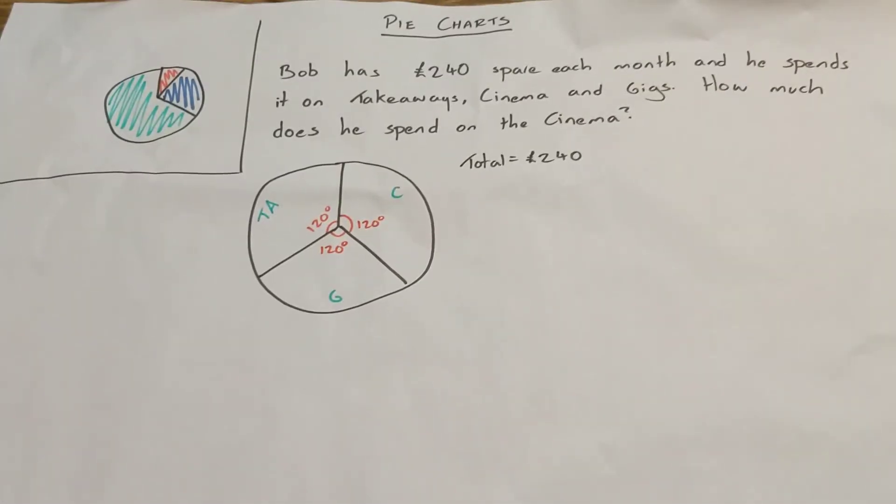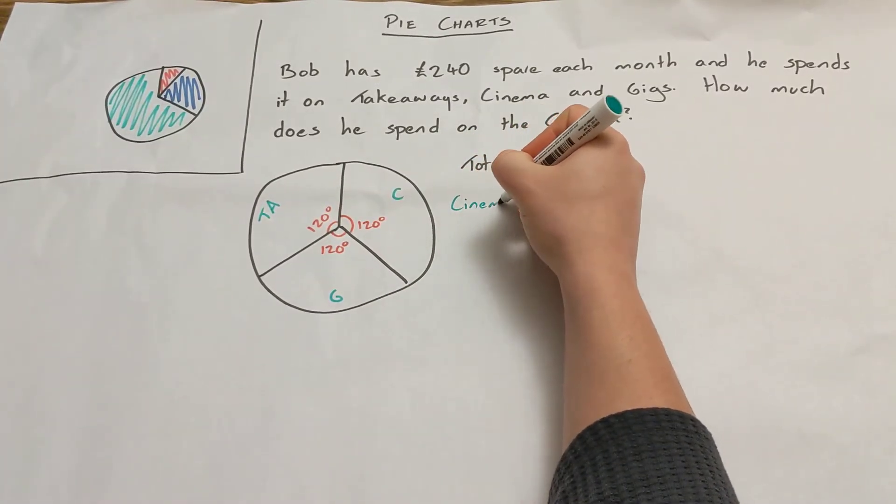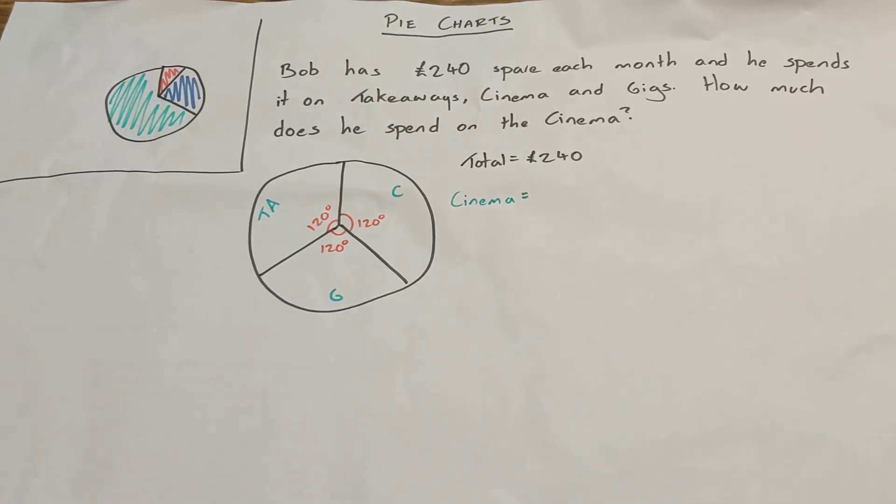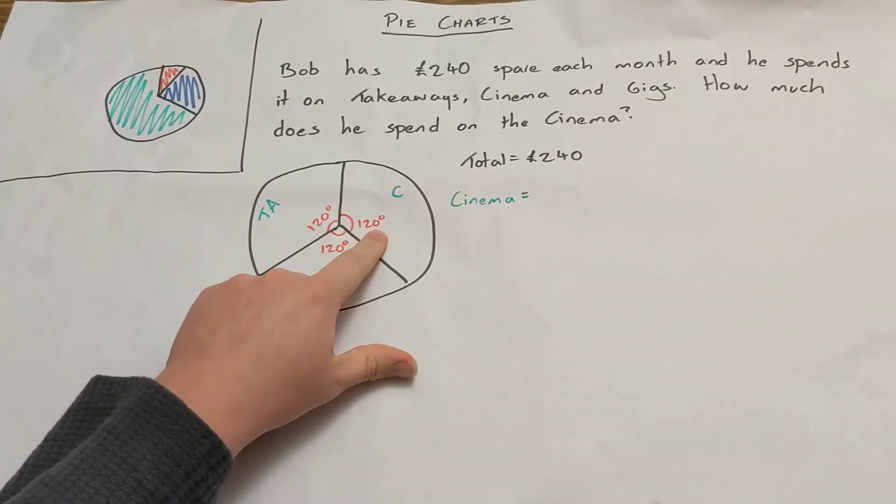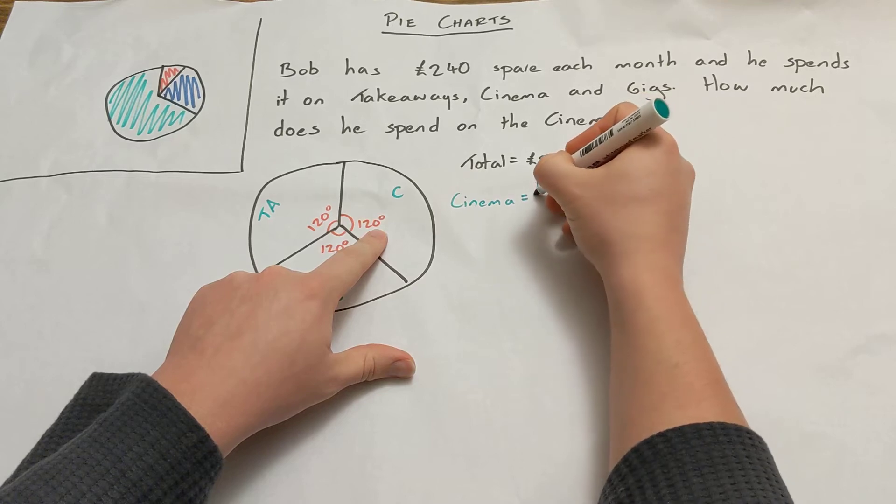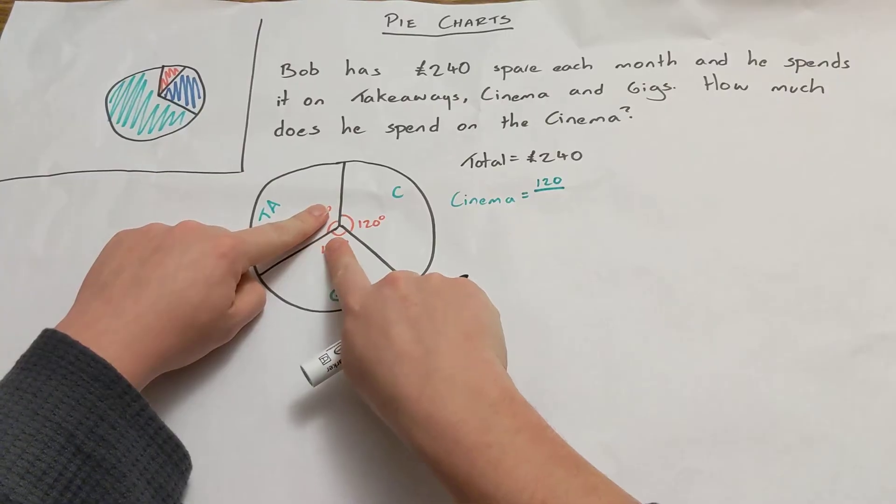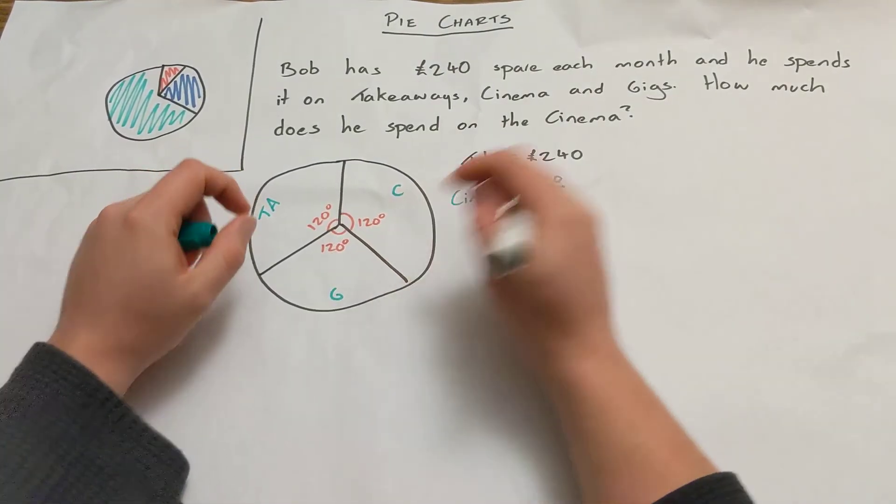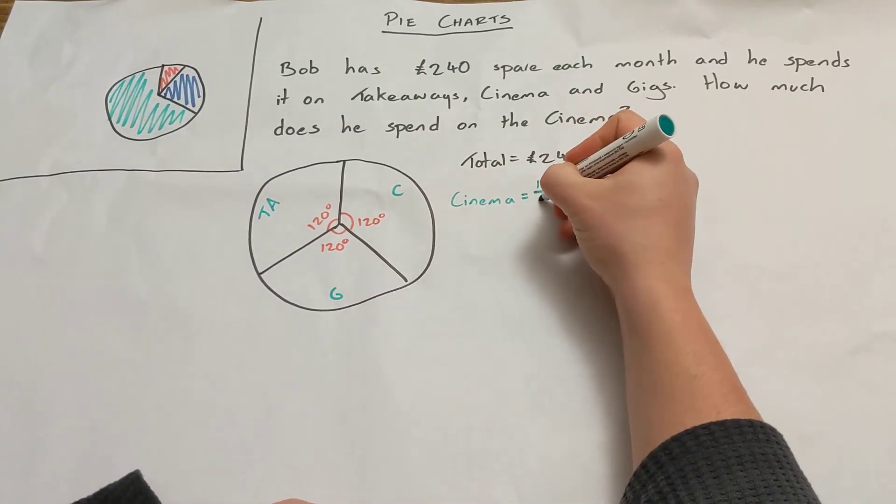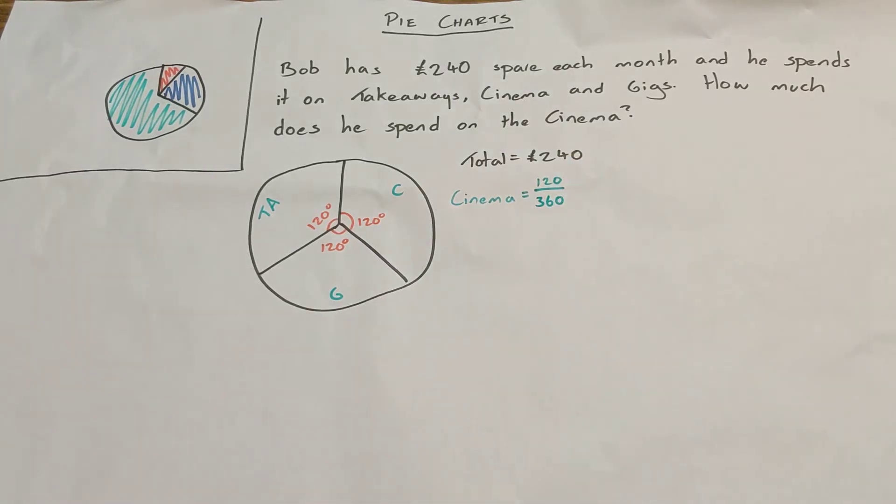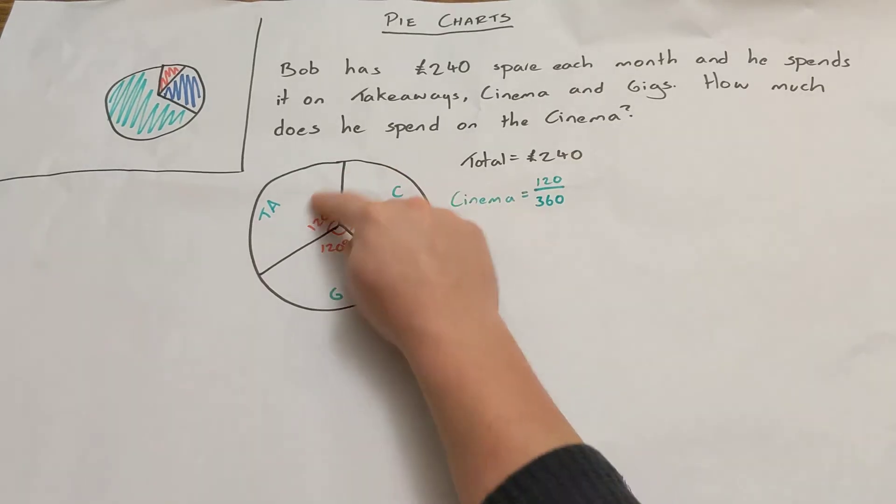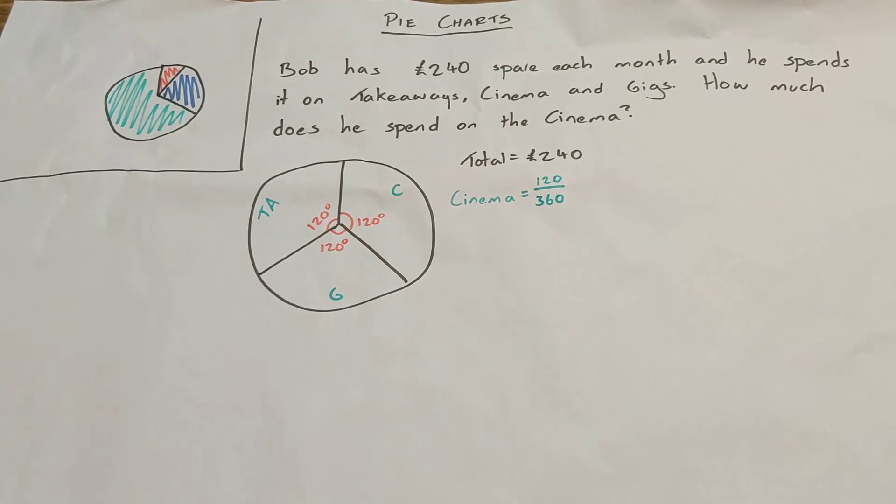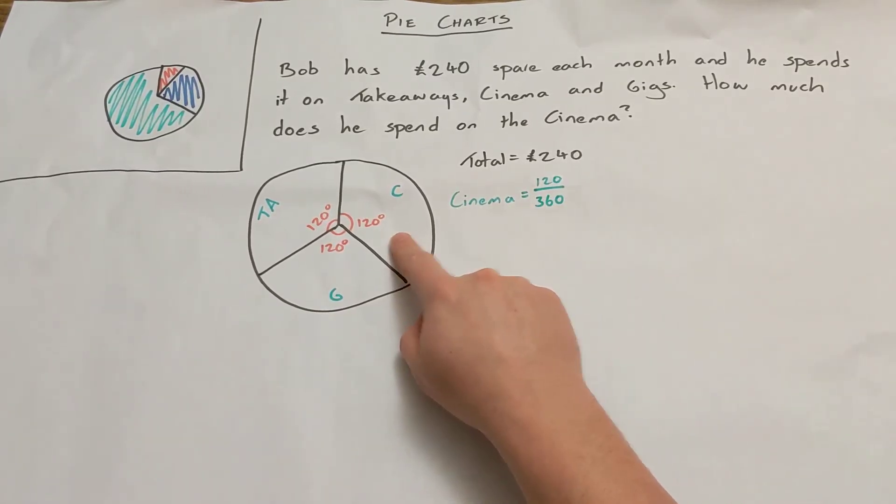So what we're going to say is that each of these angles here is 120 degrees. So let's look at the cinema then. Cinema, so we need to work out what fraction of the pie is represented by cinema, and then work out that fraction of the money. So we know the top bit of the fraction, we've got 120 of the degrees. So we've got 120 out of something. Even if these weren't labelled, we'd know what the total amount of degrees was because we know how many degrees are in a circle. There's 360 degrees in a circle, so the cinema, that is 120 out of the 360.